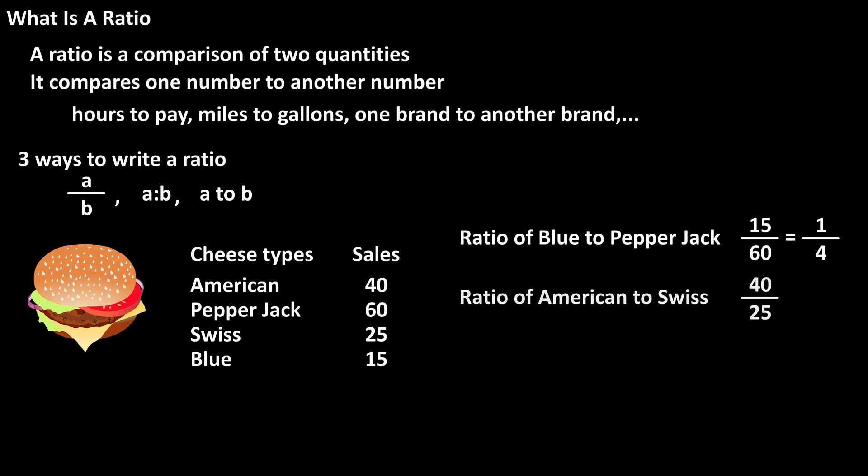And the ratio of American cheese to Swiss cheese would be 40 to 25, which both are divisible by 5, so this ratio can be reduced to 8 to 5. Always reduce if possible, as smaller numbers are easier to work with and easier to comprehend.